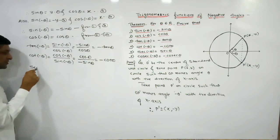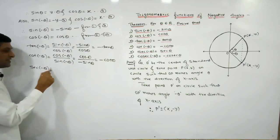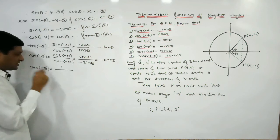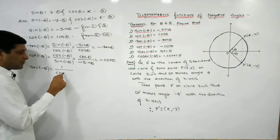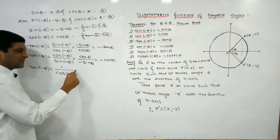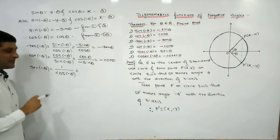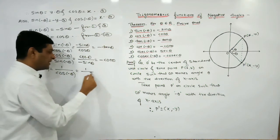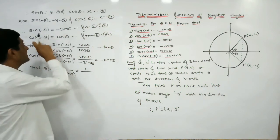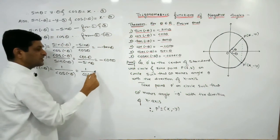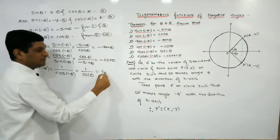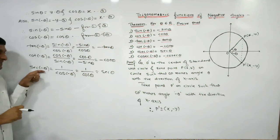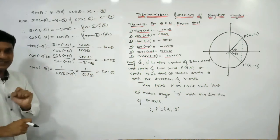To prove sec(-θ): sec can be written as 1 upon cos. So sec(-θ) = 1 / cos(-θ). We know cos(-θ) = cos θ, so 1 / cos θ = sec θ. Thus sec(-θ) = sec θ.